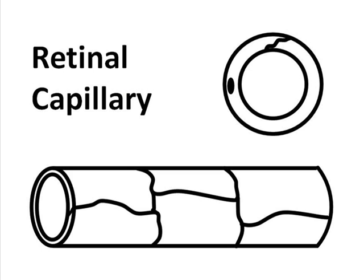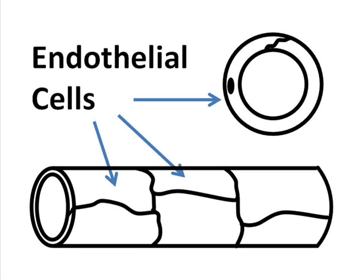This is a cross-section and side-view illustration of a retinal capillary. Retinal capillaries are formed by a one-cell thick layer of endothelial cells. In the cross-section, you can see the nucleus of an endothelial cell. These cells loop around to form a tube through which blood passes. Covering the endothelial cells is a very thin membrane, and several types of cells either surround or have appendages that contact the surface of the retinal capillaries.